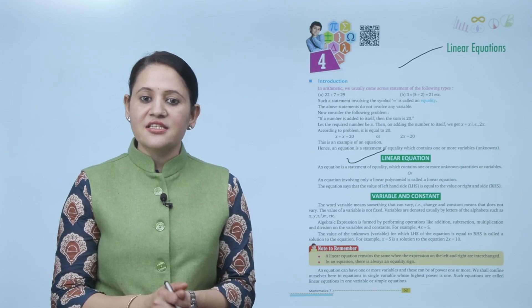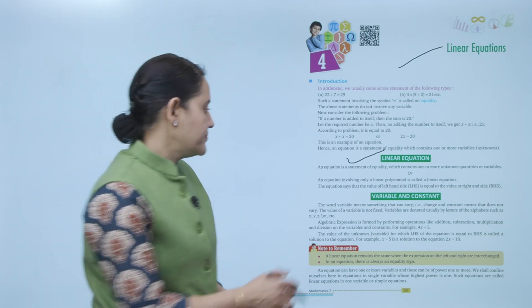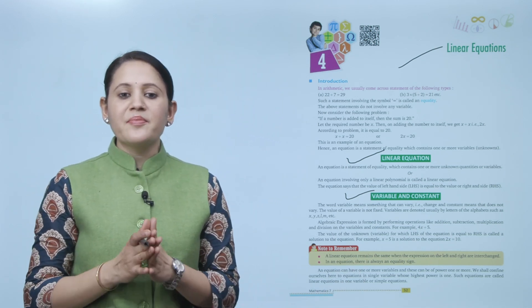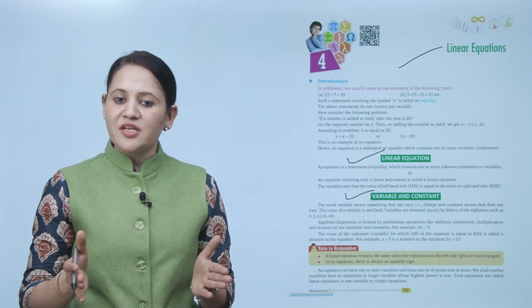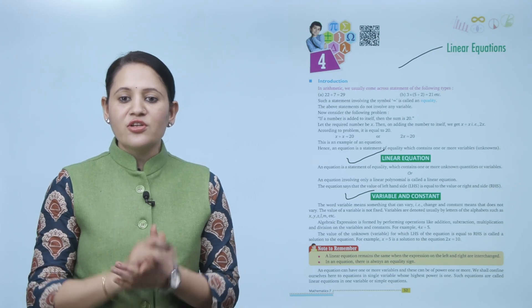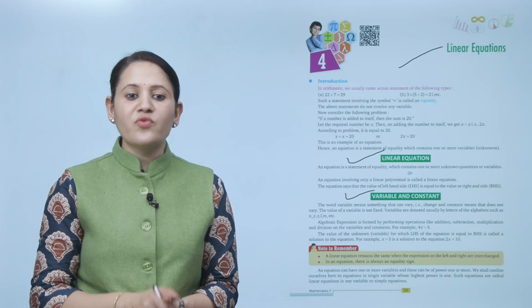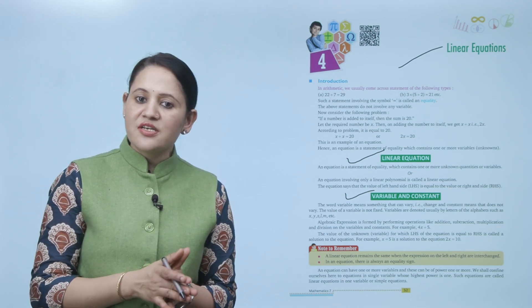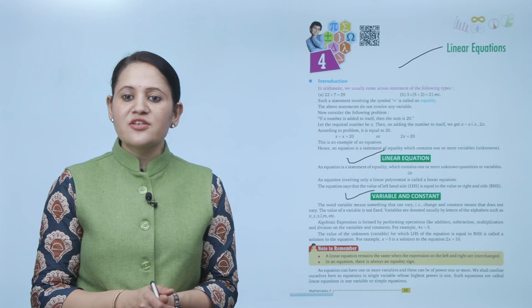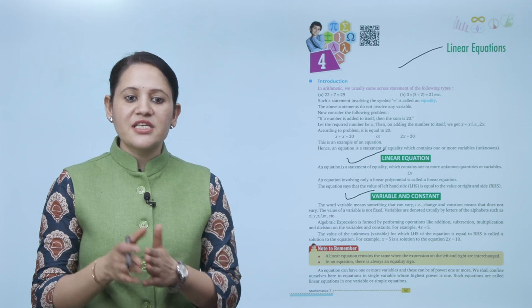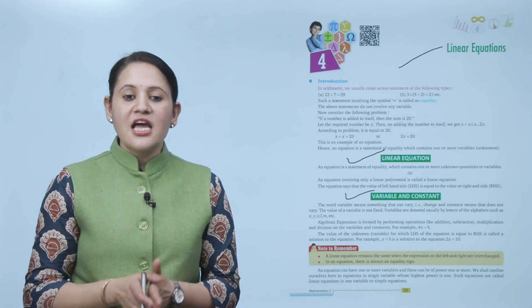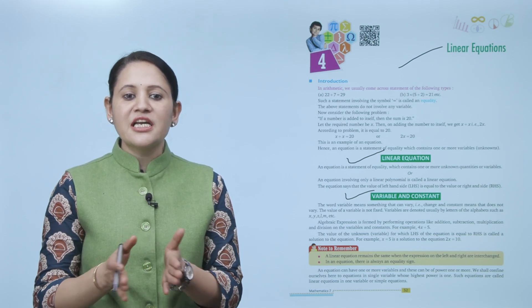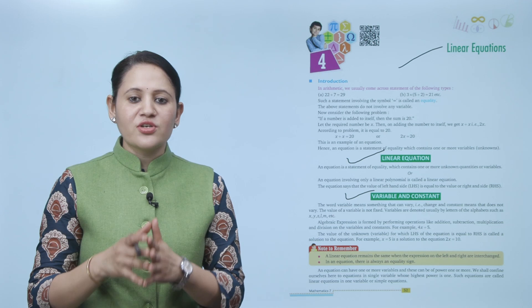Variable and constant: the word 'variable' means something that can vary, meaning it keeps changing, while 'constant' means it does not vary — it has a fixed value. The value of the variable is not fixed. Variables are usually denoted by letters of the alphabet such as x, y, z, l, m, etc. An expression is formed by performing operations like addition, subtraction, multiplication, and division on variables and constants.